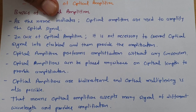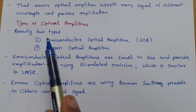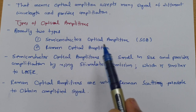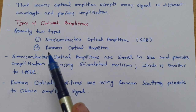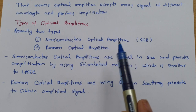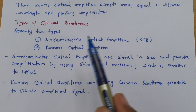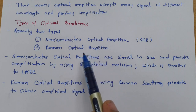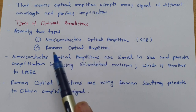Now let us see types of Optical Amplifiers. There are broadly two types. One is the Semiconductor Optical Amplifier, also referred to as SOA, and the second is the Raman Optical Amplifier. There are some other categories as well, but broadly these two main categories are commonly used.